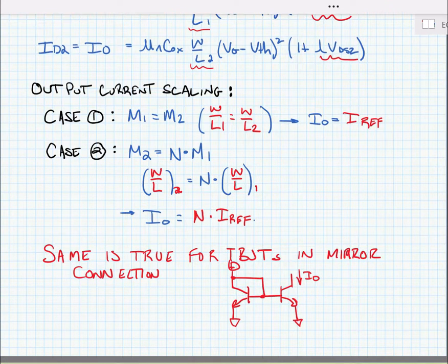It's also true that we can connect more than one current source to this diode connected transistor so we can generate multiple output currents using only one reference voltage generator. And we'll look at that in the next video.